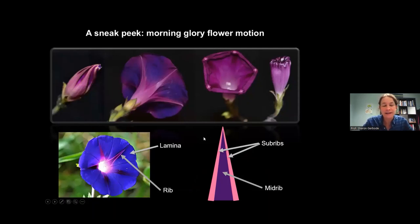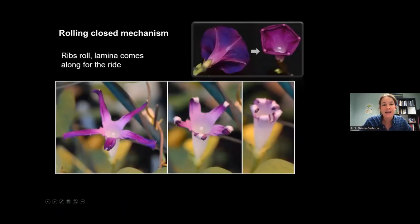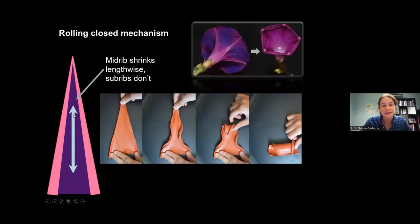So just really quickly, a little bit of anatomy for you. So again, the sort of blue petelly part is called the lamina. It's very soft and floppy, and it just kind of comes along for the ride. And all the interesting motion is caused by these five rigid ribs, which start out twisted in the bud, then sort of straighten out when it's completely unfurled in its open state, and then roll closed at the end. So each rib is like a long skinny triangle. And if we look at one rib, it's actually made up of three distinct regions. You can kind of tell in this image up here, there are these two sort of thicker parts along the edges, which we call sub ribs, and then a flatter region that connects the two that we call the mid rib. And so just super quickly, the rolling closed mechanism, we quickly discovered that if we cut off all the lamina, it's still rolls closed just the same.